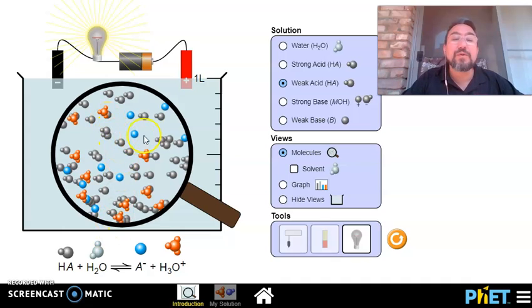Notice how here most of those are that gray color for the original weak acid. We only have a few of the ions present.